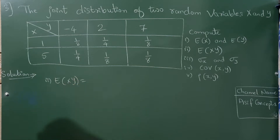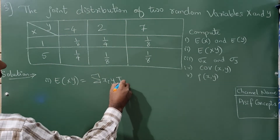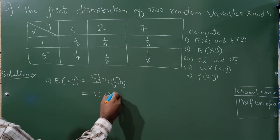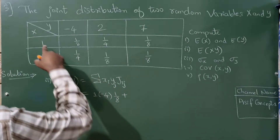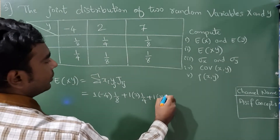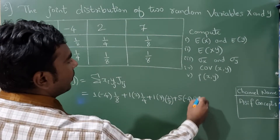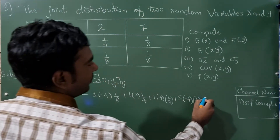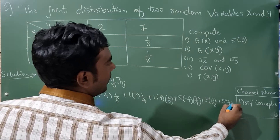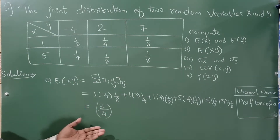The formula for E(XY) is the summation of x_i · y_j · P(x_i, y_j). Computing each term: (1)(−4)(1/8) + (1)(2)(1/4) + (1)(7)(1/8) + (5)(−4)(1/4) + (5)(2)(1/8) + (5)(7)(1/8). Calculating this gives a final answer of 3/2.